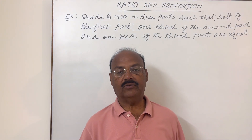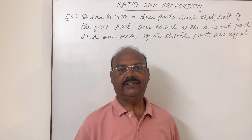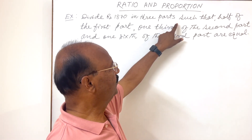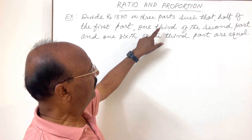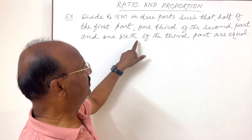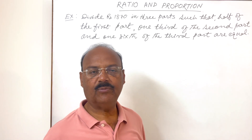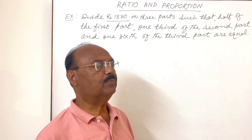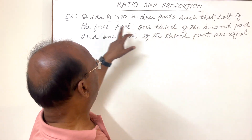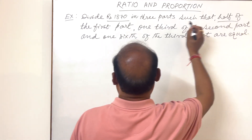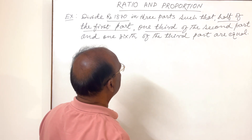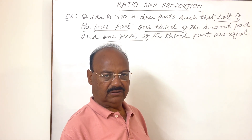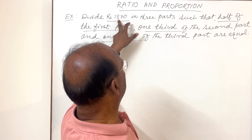Welcome students. Let us see a very interesting and important question from the chapter Ratio and Proportion. The question is: divide rupees 1870 in three parts such that half of the first part, one third of the second part, and one sixth of the third part are equal. We have to find out all three parts of rupees 1870 which satisfy this condition.